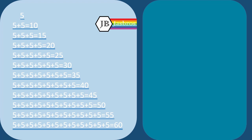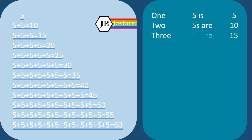Now you can have a better understanding of repeated addition. One five is five. Two fives are ten. Three fives are fifteen. Four fives are twenty. Five fives are twenty-five.